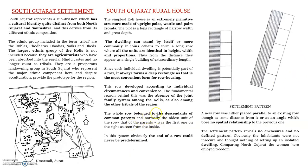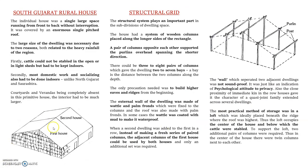Each row belongs to the descendants of common parents. Initially this type of arrangement existed in South Gujarat. They had upright poles connected by horizontal elements of bamboo or available wood, covered with palm. Initially it was a partition, but later they started applying mud along the wattle to create a more stable and solid enclosure.